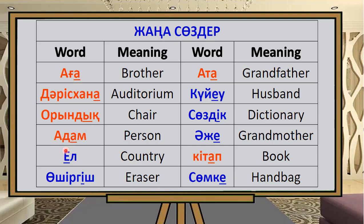The next word means 'country.' Then we have the word for 'eraser' — Aten. Next is the word for 'grandfather.' Then 'husband.' Susdek — meaning 'husband.' Next, Ajay — meaning 'grandmother.' And 'dictionary.'